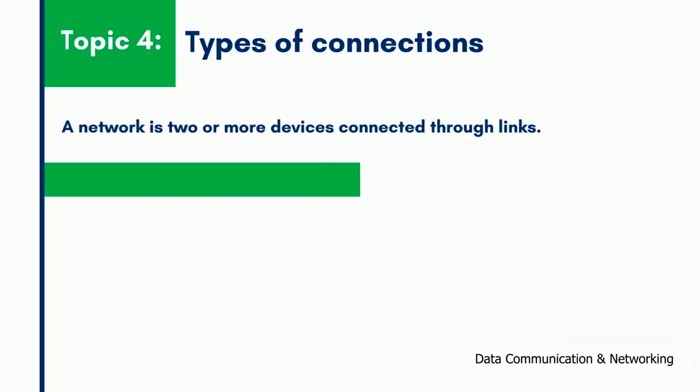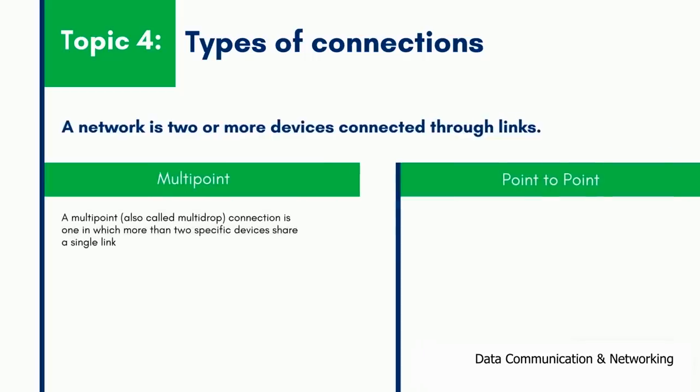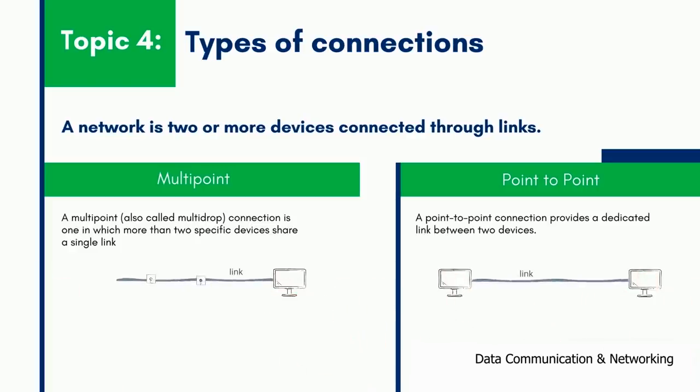Now let us discuss the fourth topic: types of connections. In the network, there are basically two types of connections—point-to-point and multipoint. In a multipoint connection, more than two specific devices share a single link. In point-to-point, a dedicated link is provided between two devices.